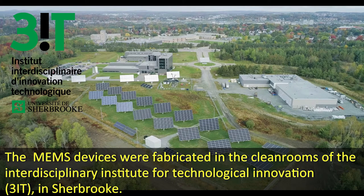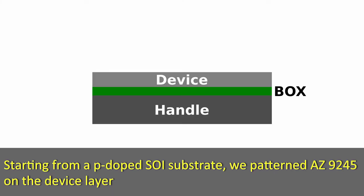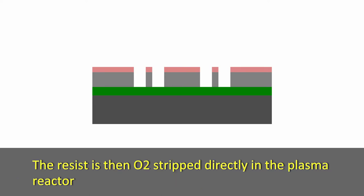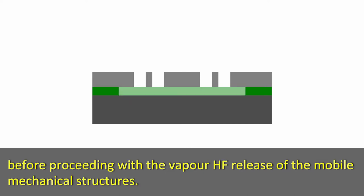The MEMS devices were fabricated in the cleanrooms of the Interdisciplinary Institute for Technological Innovation, in Sherbrooke. Starting from a p-doped SOI substrate, we pattern the resin on the device layer in order to subsequently etch the mechanical structures through advanced silicon etching. The resin is then O2-stripped directly in the plasma reactor before proceeding with the vapor HF release of the mobile mechanical structures.